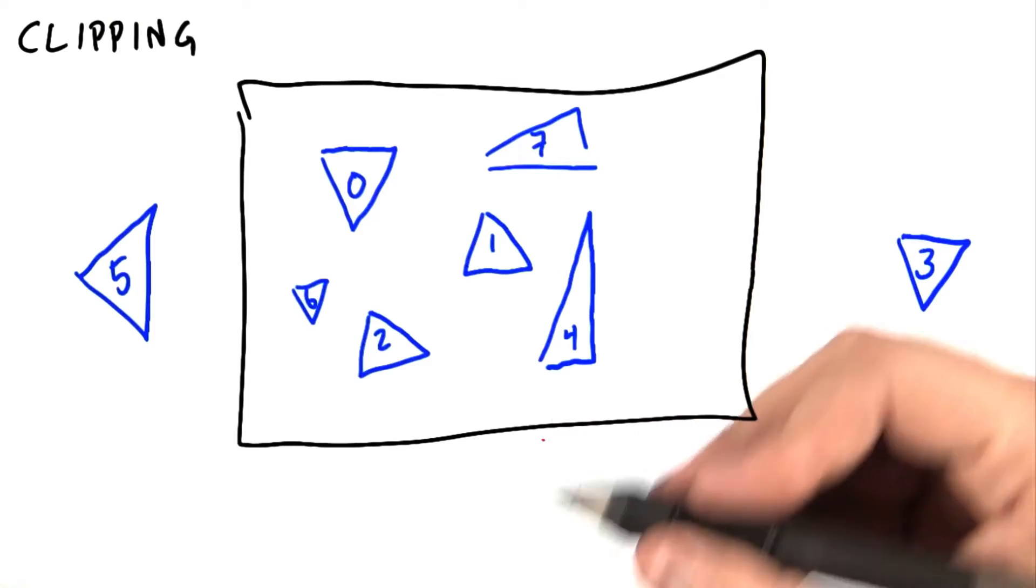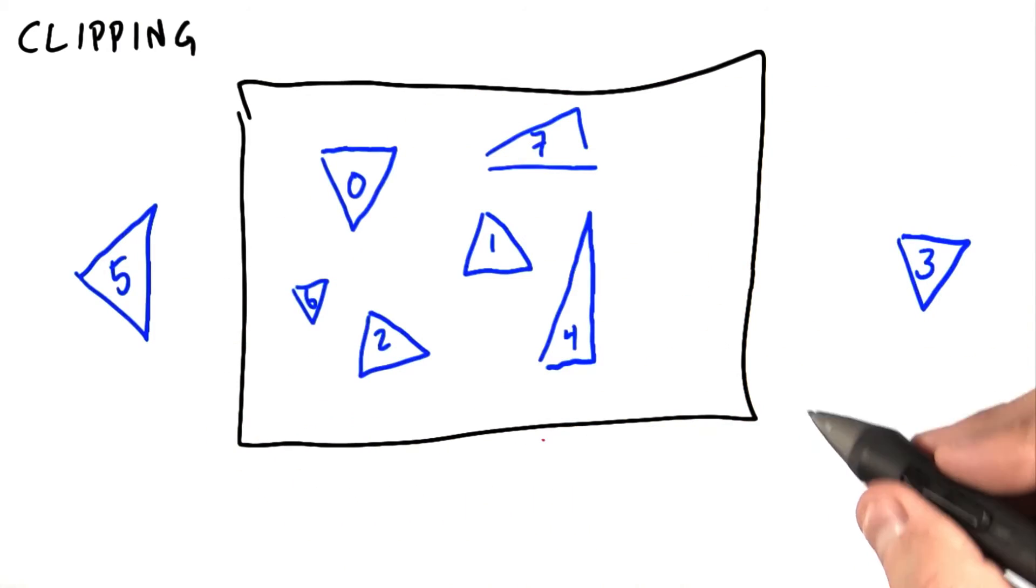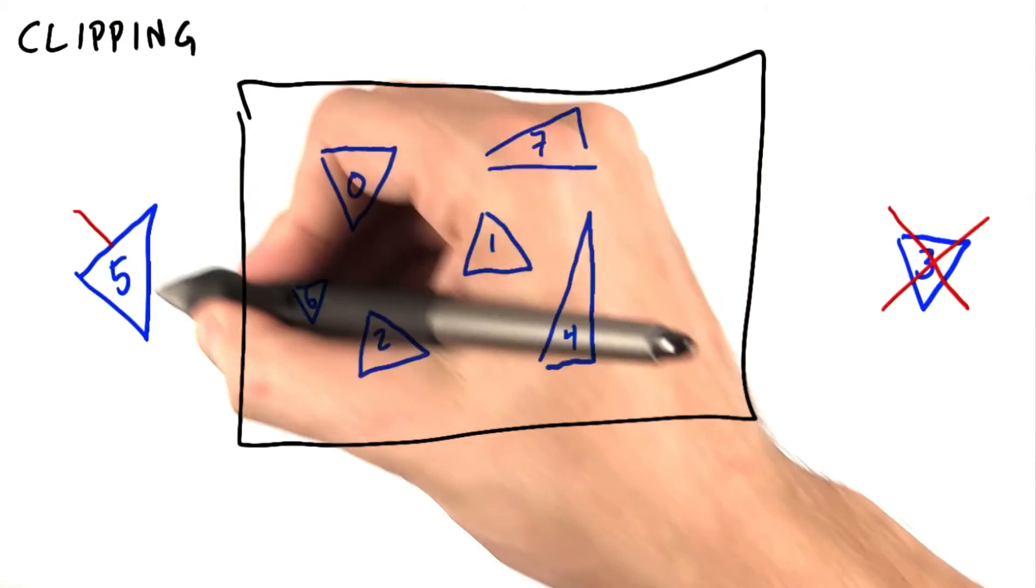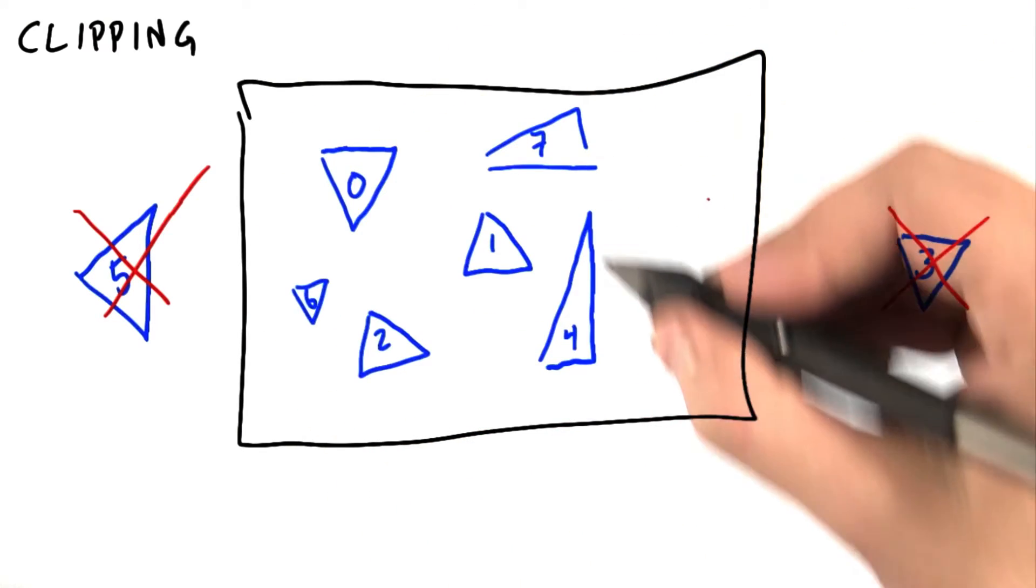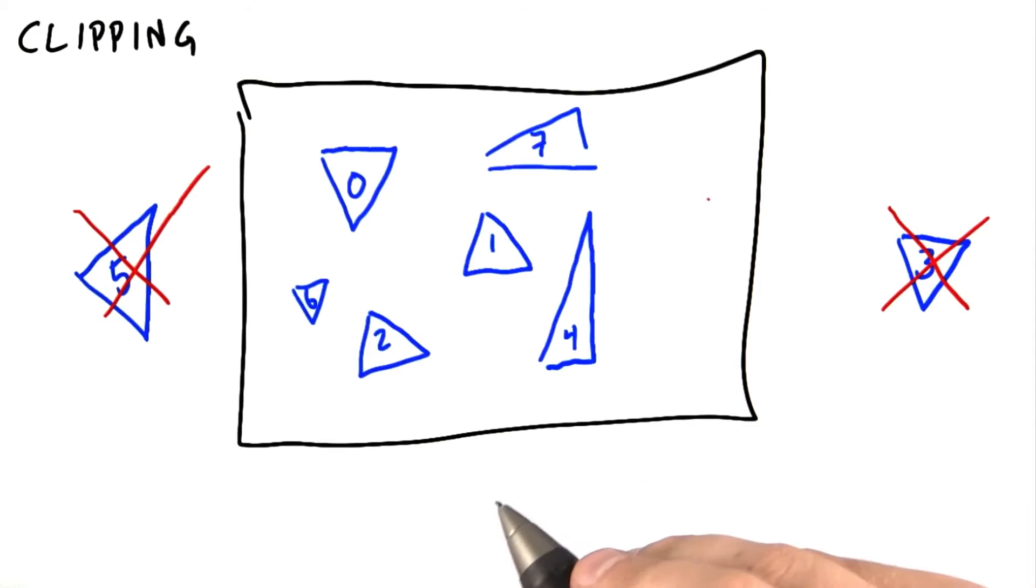This is a compact operation. We compact an input stream of triangles, some of which are visible and some are not, into a smaller output stream where all triangles in the output stream are visible. And we know how to do this with compact. Now, here's the more complicated problem.